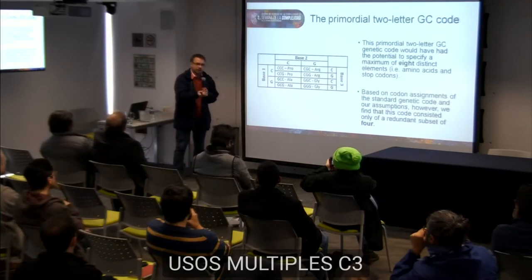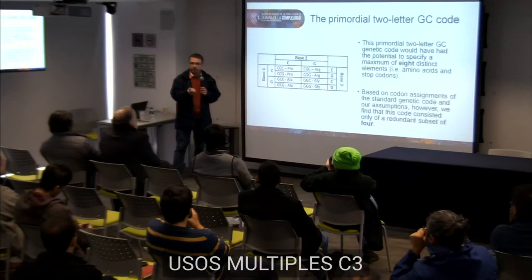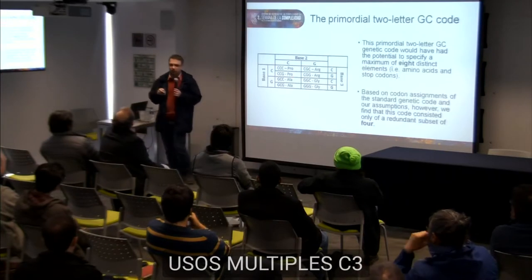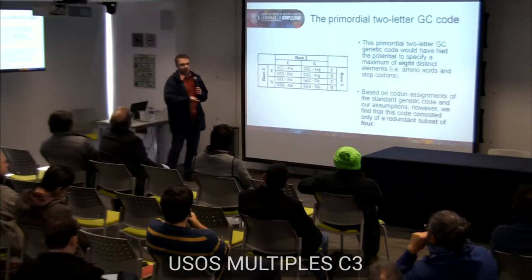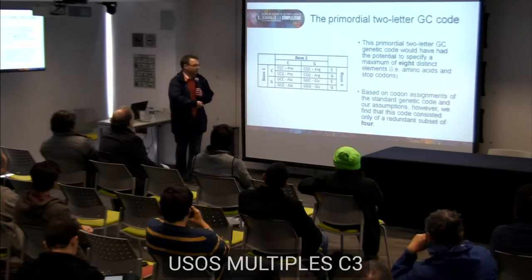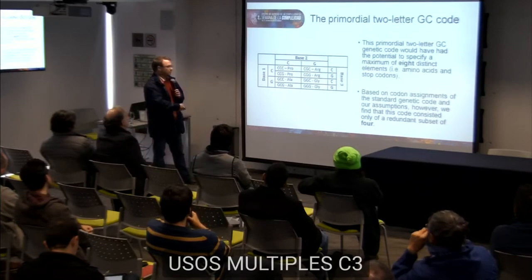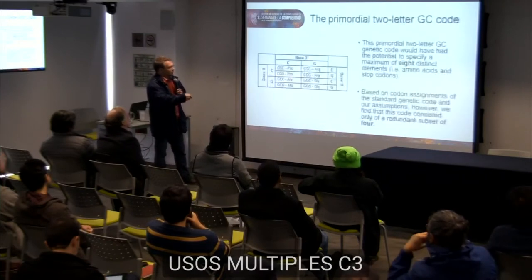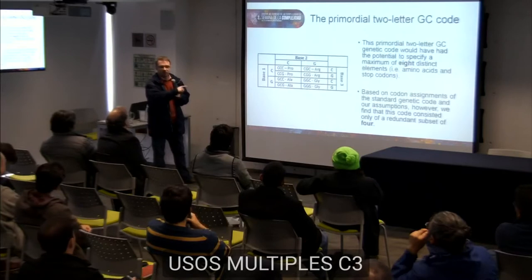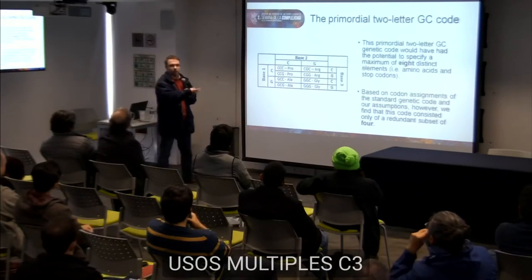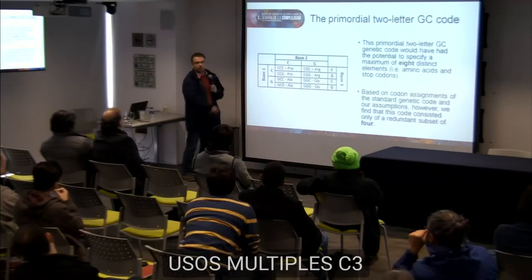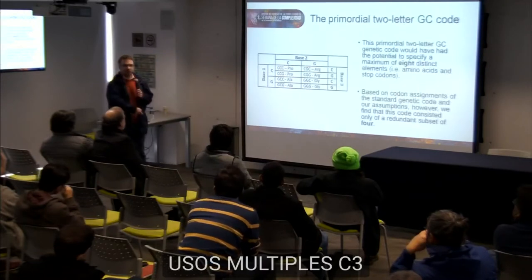Is it reasonable that pro, arg, and gly were the first amino acids? We can check this using expected prebiotic abundance — at the very origin of life, without complex metabolic networks, the amino acids used were probably abundant in the environment. We can also note that we could have had eight amino acids with eight possible codons, but we only find four. This is actually nice because it shows that even at the very early stage there was some redundancy, increasing error robustness. For example, due to third-base wobble, it doesn't matter whether the third base is C or G — both give the same amino acid.